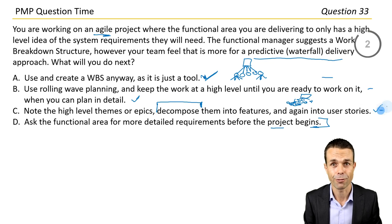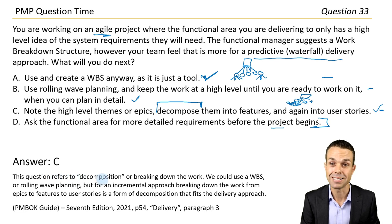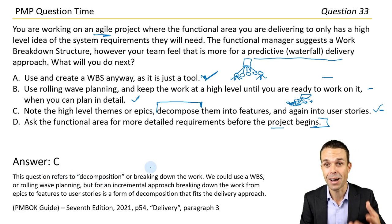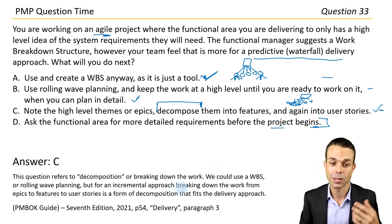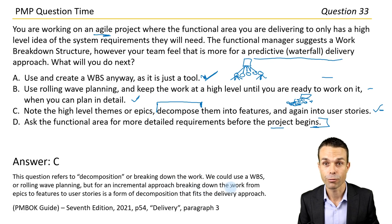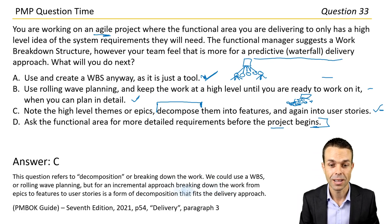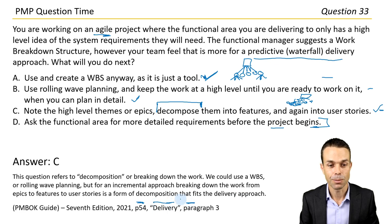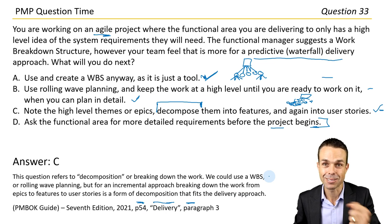All of these are pretty good, but the best one for an agile approach is answer C. This question refers to decomposition — breaking down the work. We could use a work breakdown structure or rolling wave planning, but for an incremental approach, breaking down the work from epics into features to user stories is a form of decomposition that fits the delivery approach. Page 54 under delivery, paragraph three, PMBOK Guide 7th edition.